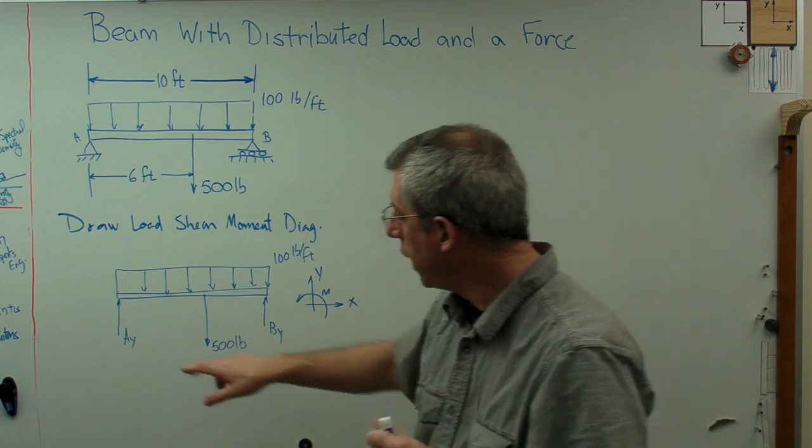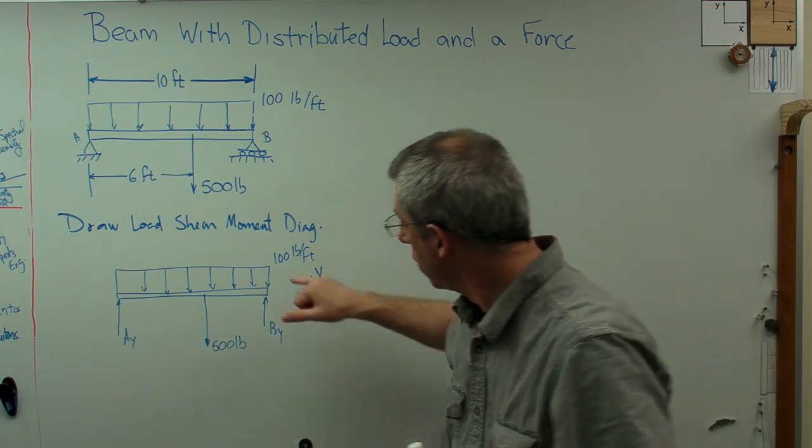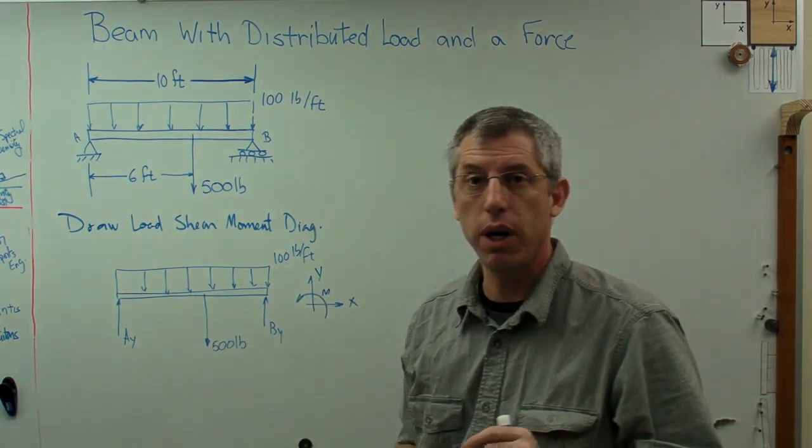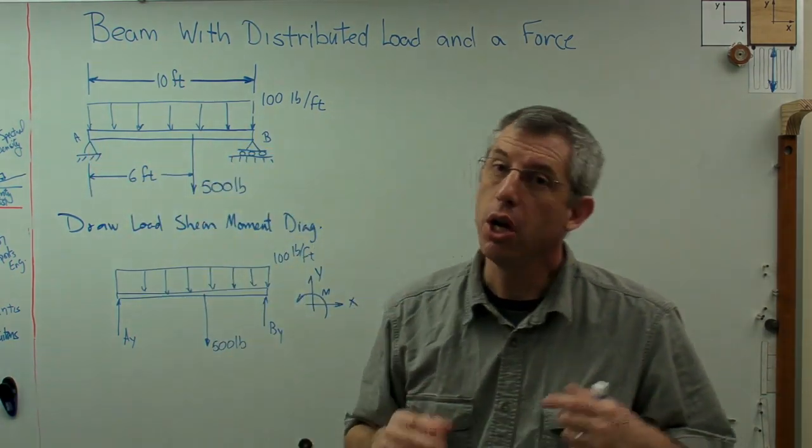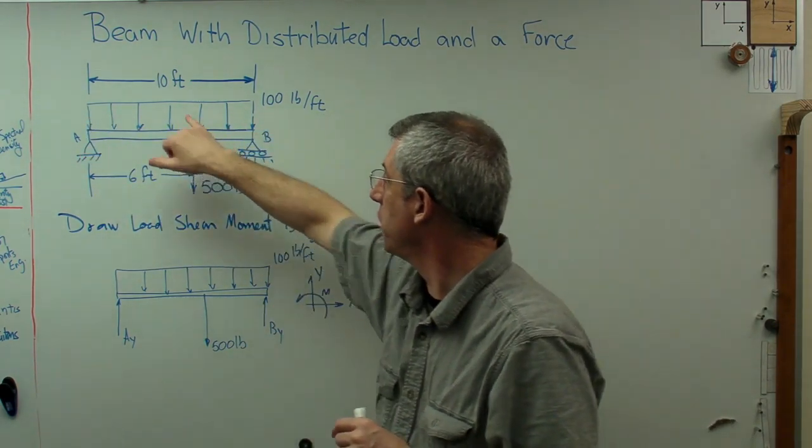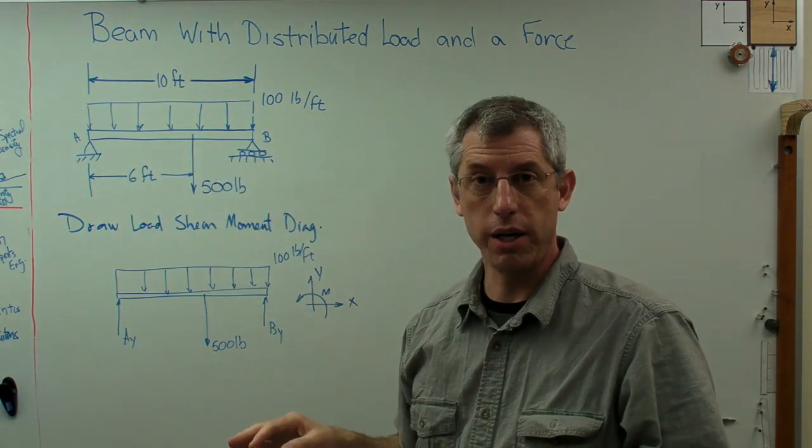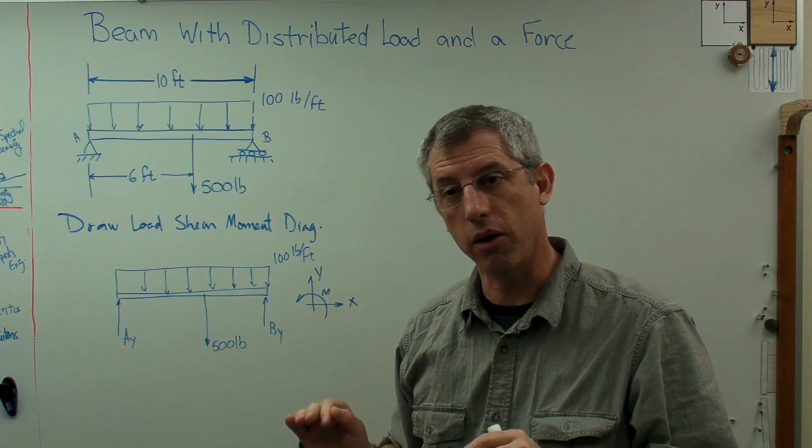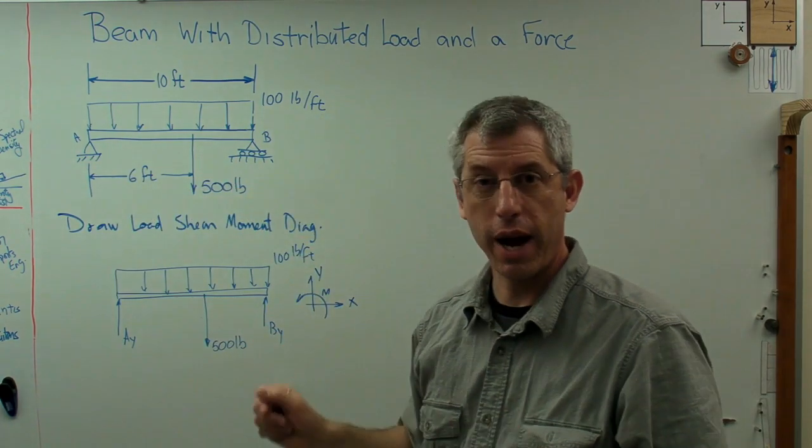Now, there's only one thing here. We've got a distributed load. How are we going to deal with that? Well, for finding the reaction forces at the end, we can concentrate that distributed load. We can find out what the total distributed load is and place that single force at the centroid of that load. Now, the reason we can do this is that the reaction forces don't know the difference. This pin here and that pin here do not know the difference between a distributed load and a properly concentrated load that has the same net force. Now, the beam itself does. You're going to get the wrong load shear moment diagram if you try to draw it by concentrating the force rather than distributing it, but you can get the correct reaction forces. So let's do that.